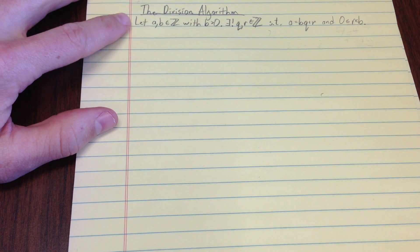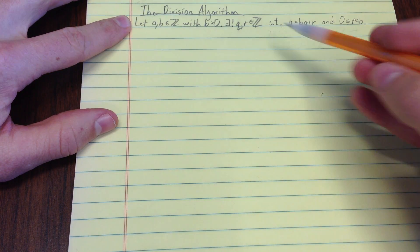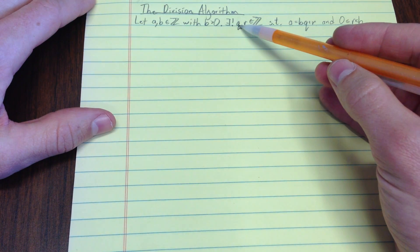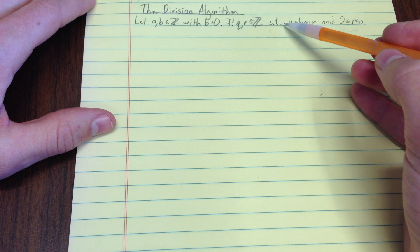So the division algorithm says let a and b be integers with b greater than 0. There exists a unique q and r that are integers.